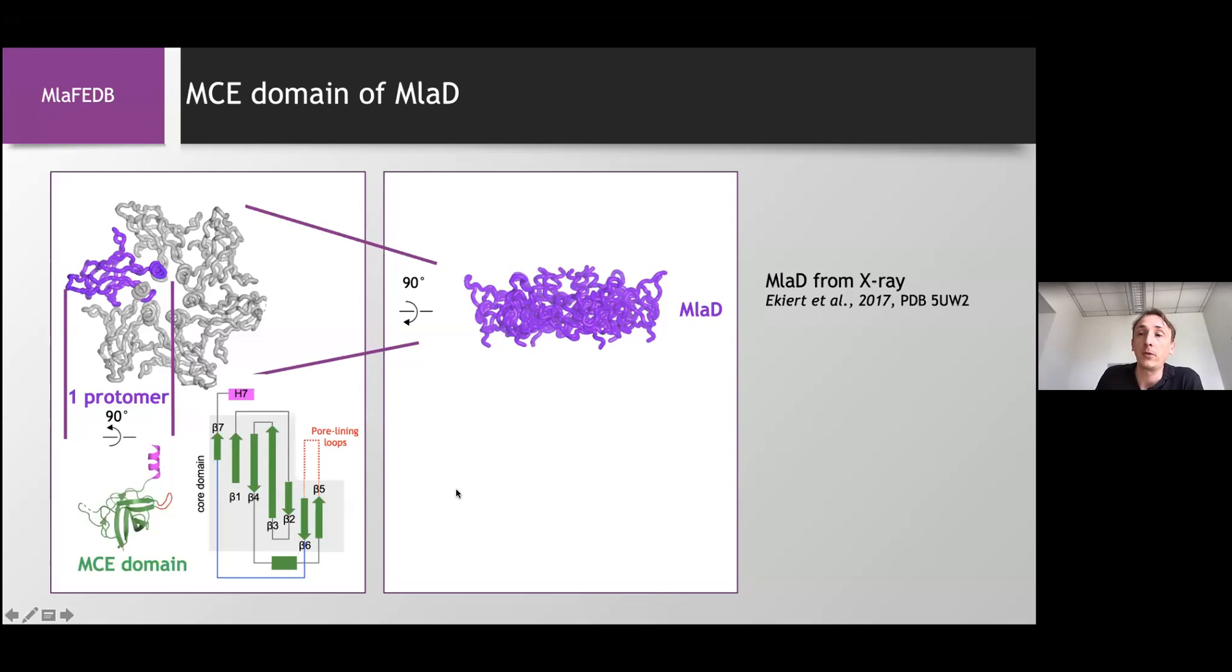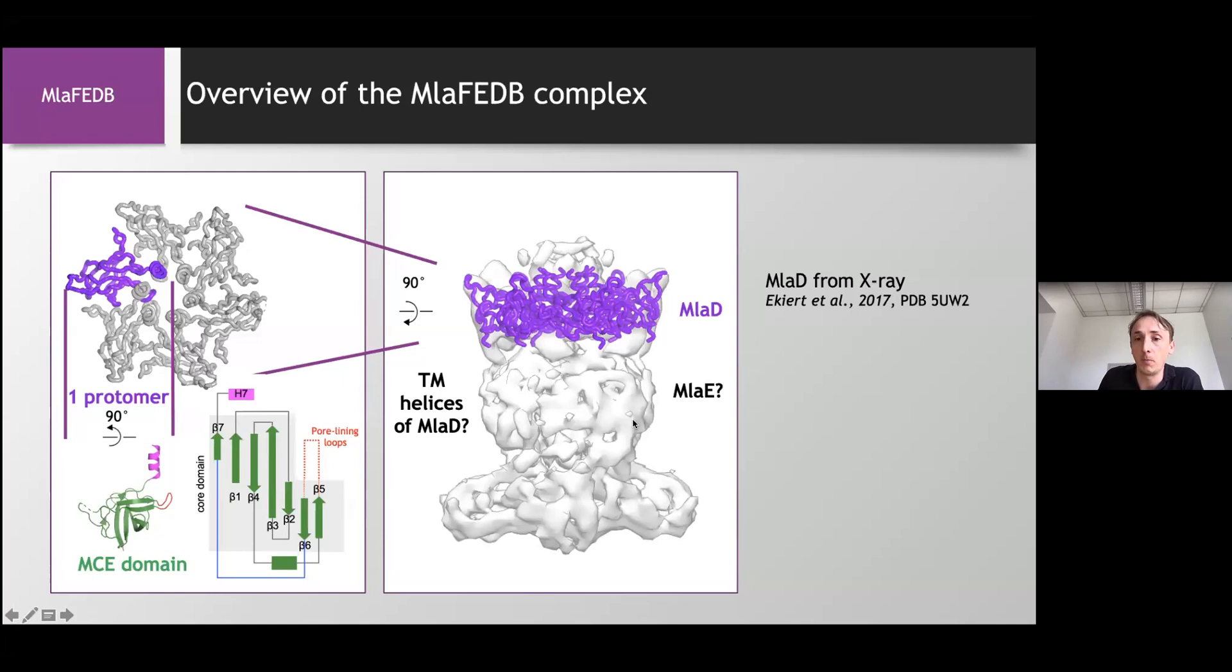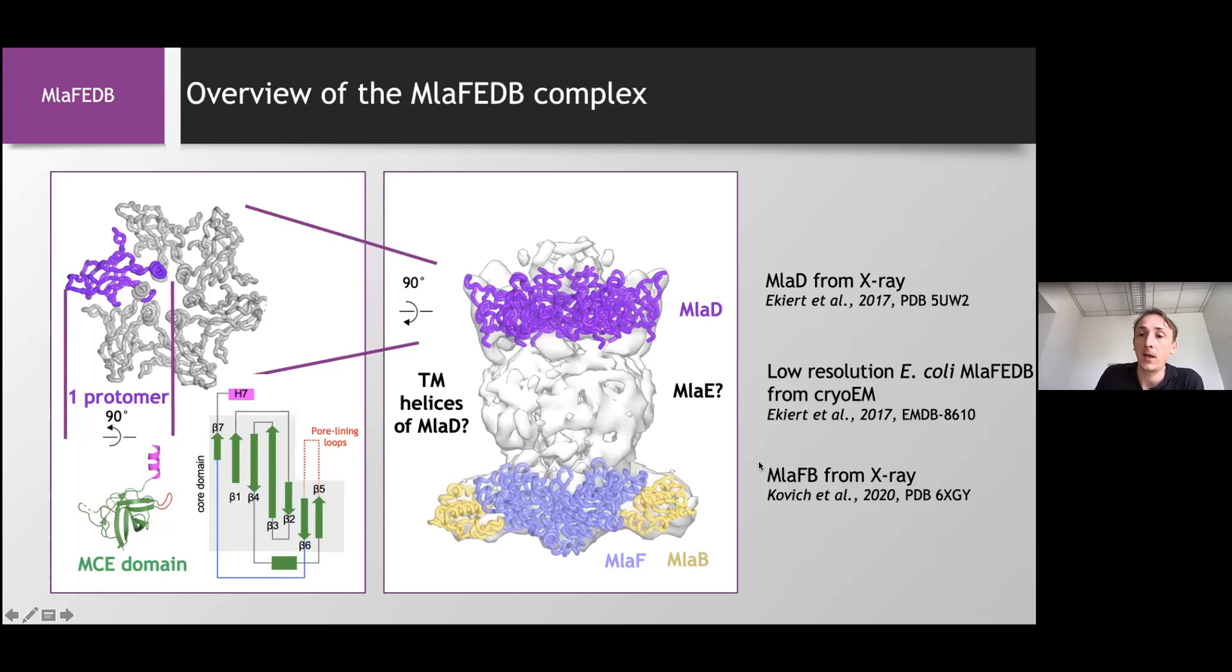So I'm going to talk about three different E. coli lipid transporters which contain this MCE domain. And the first one is where this MLAD is part of, so it's called the MLA-FEDB complex. And up to last year, there was only low resolution cryo-EM maps of the whole structures. And the only parts which were known was the structure of the soluble part of MLAD without the transmembrane helices, as I said, from X-ray. A low resolution map of the whole complex and a high resolution X-ray structure of the MLA-FEDB, which is a dimer located at the bottom in the cytoplasm, which was done last year or published last year by our lab.